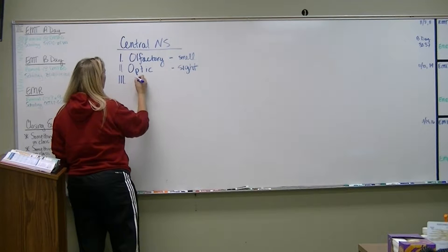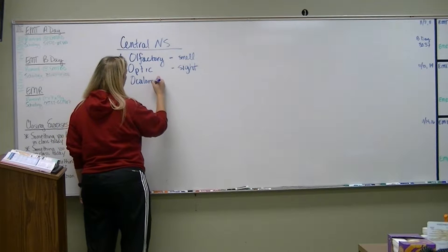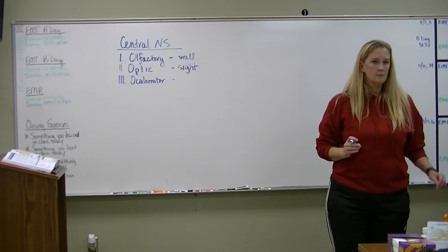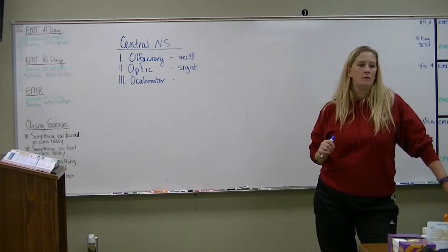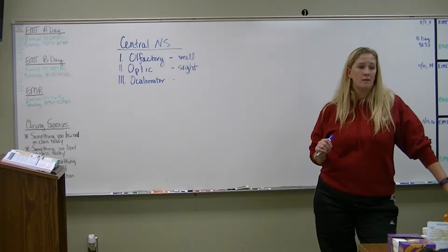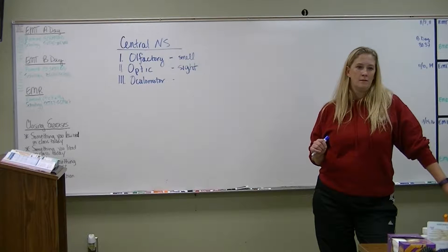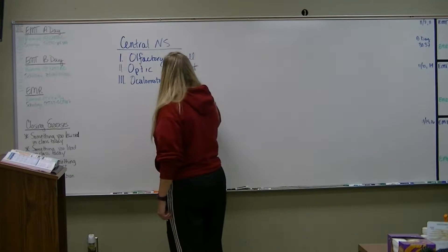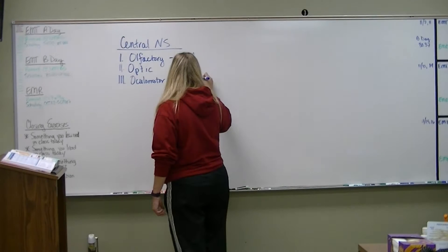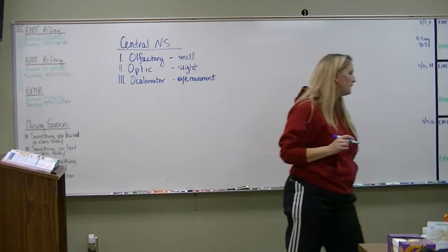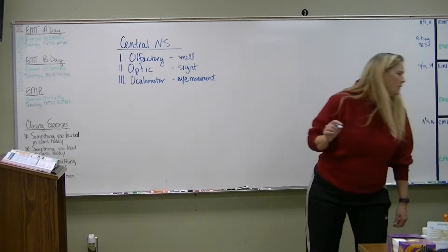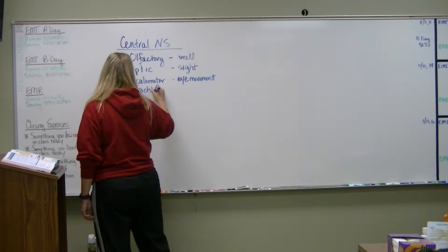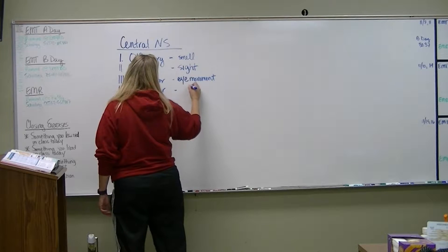Okay, the third cranial nerve is called the oculomotor. And what is that responsible for? It's in the name. Break it down. Something movement. Something movement, yeah. Good job. Okay, then you have the trochlear. This one doesn't make sense. It is also responsible for eye movement.